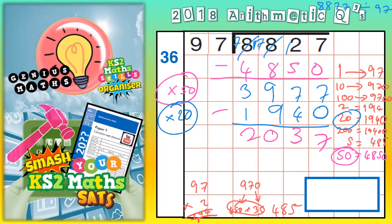So we're down to 2037. Now, the obvious thing to do here is subtract another chunk of 1940. Which again is another chunk of 20. So I'm going to write 20 at the side here. See where this takes me.